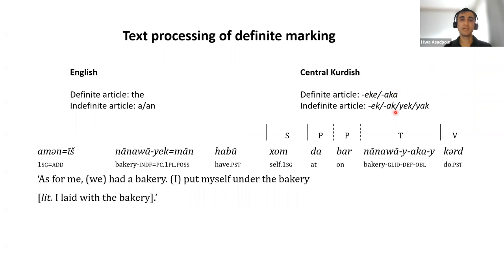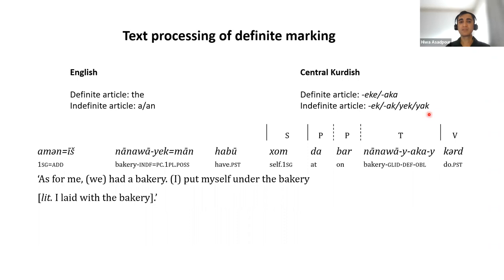For the indefinite marker, the last two variants — 'Yek' and 'Yek' — are equivalent for 'one', but they are also used for indefinite because sometimes due to vowel assimilation, people may consider both as 'Ek' or 'Ak'. I also give an example of how this language variety sounds. For example: 'Amnish Nanwa Yekman Habu Khom Daber Nanwa Yekei Mkirt' — meaning 'as for me, we had a bakery; I put myself under the bakery'.